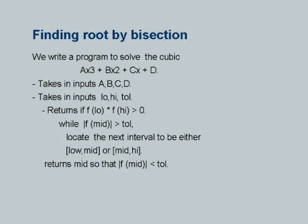Let's get back to this. I find out the midpoint, I check if f at midpoint is greater than the tolerance — which means I still have to search — then I look at whether the next interval is this half or that half. I return mid when the while loop ends, because that means I have reached close to 0 in terms of the function value at mid.